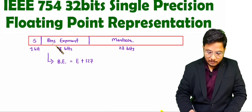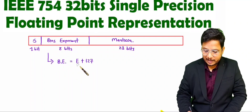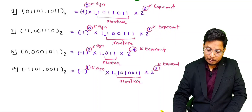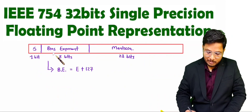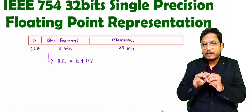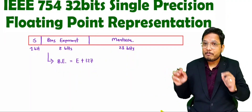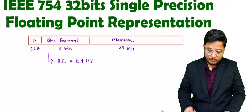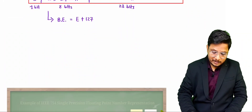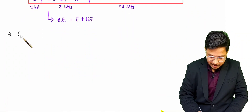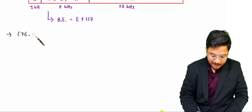When you want to calculate the bias exponent, first you identify the exponent, then add 127 to get the bias exponent. The mantissa is the 'something' after 1 point something. Let me explain this with an example. Let us consider the decimal number 76.125.